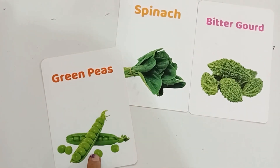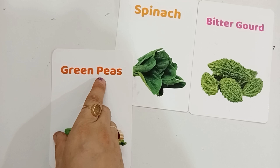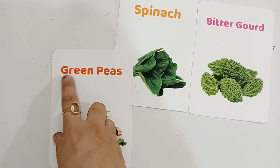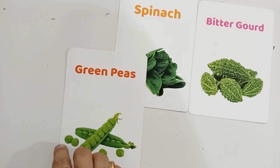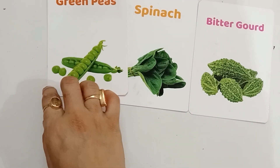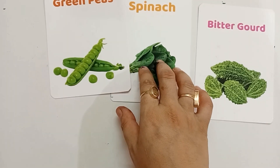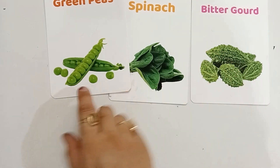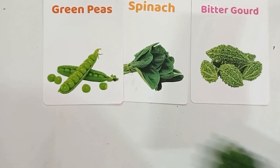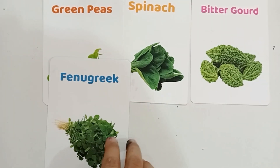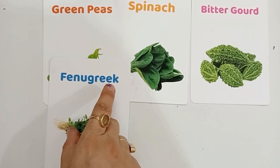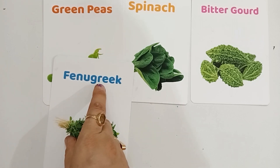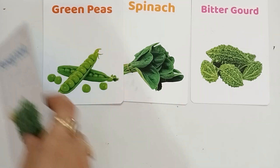G for Green Peas, G-R-E-E-N-P-E-A-S, Green Peas. F for Fenugreek, F-E-N-U-G-R-E-E-K, Fenugreek. Fenugreek is also a vegetable.